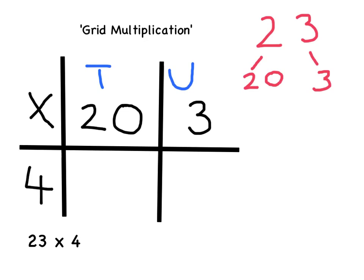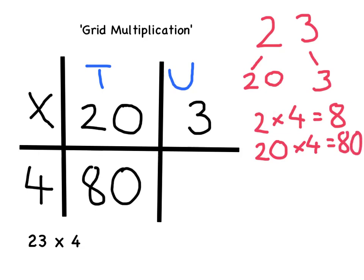You are now ready to use the grid to multiply. So in this box we do 20 multiplied by 4. We can use our times table knowledge to help us with this. If 2 multiplied by 4 equals 8 then 20 multiplied by 4 must equal 80. So 80 is the number that will go into this box.